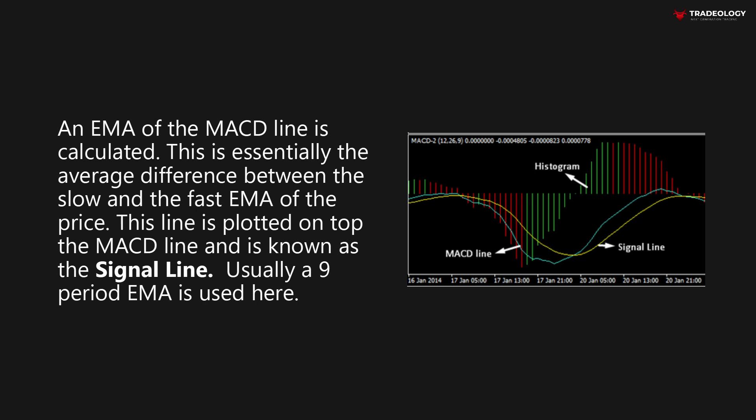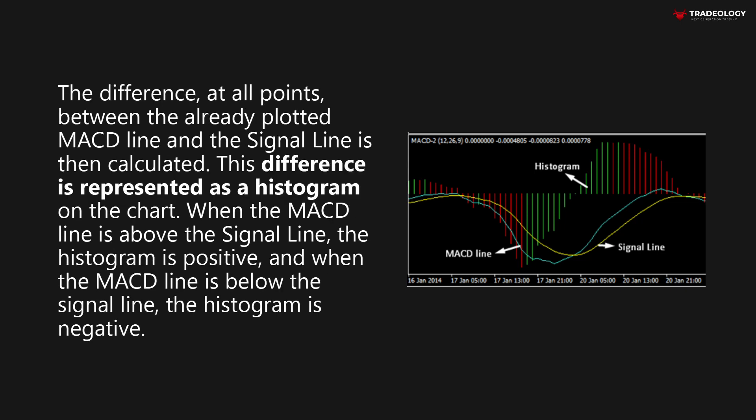An EMA of the MACD line is calculated — this is essentially the average difference between the slow and the fast EMA of the price. This line is plotted on top of the MACD line and is known as the signal line; usually a 9 period EMA is used here. The difference at all points between the MACD line and the signal line is then calculated and represented as a histogram on the chart. When the MACD line is above the signal line, the histogram is positive, and when below, the histogram is negative.